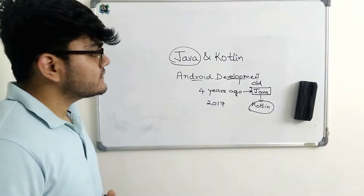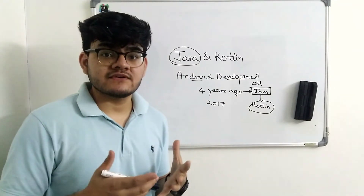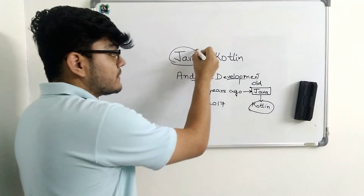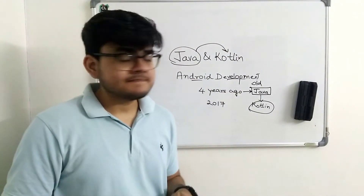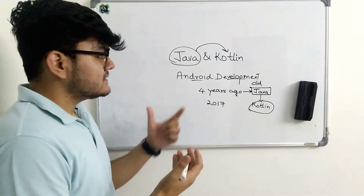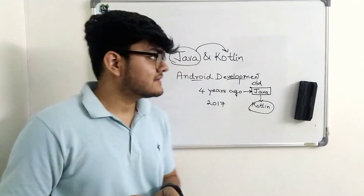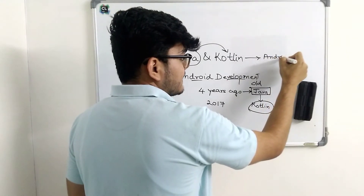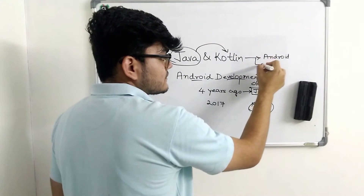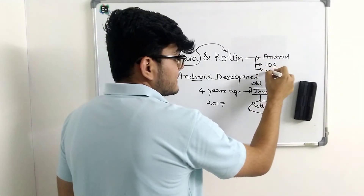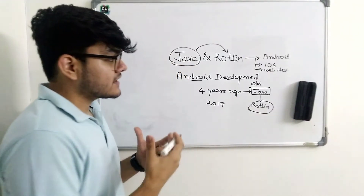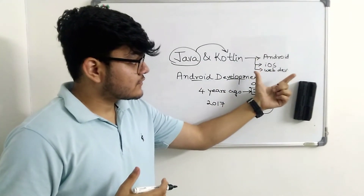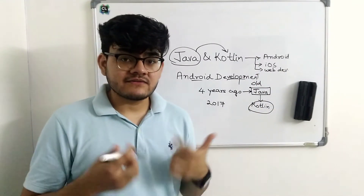When Kotlin was introduced, it had a lot of intuitive features that made many developers and even big companies shift their code from Java to Kotlin — in Android development specifically. One of the first reasons was that if you develop an app in Kotlin, that code can also be used to create an iOS app and even for web development. So you write your code once and it's available across Android, iOS, and web.